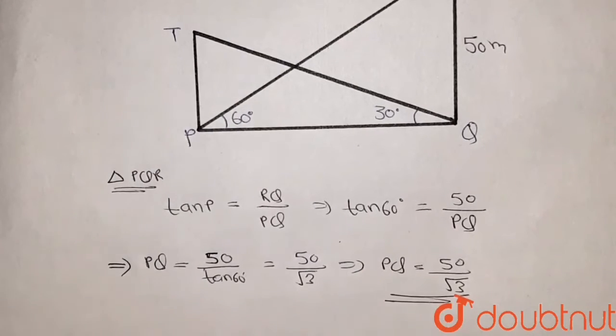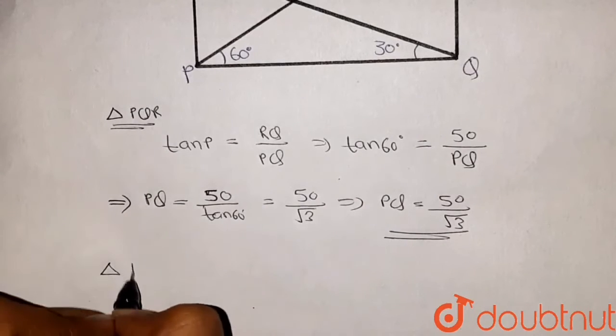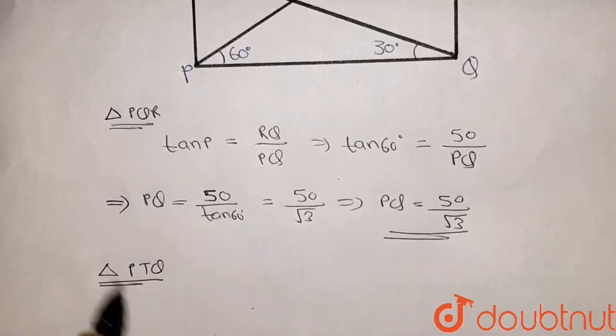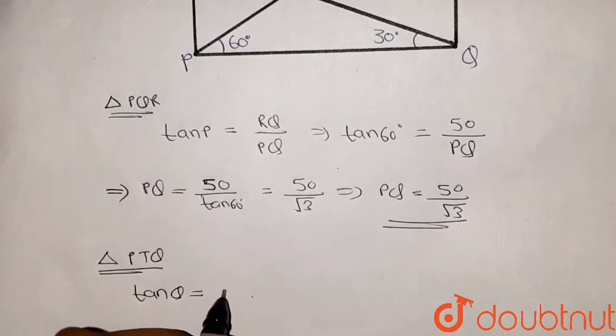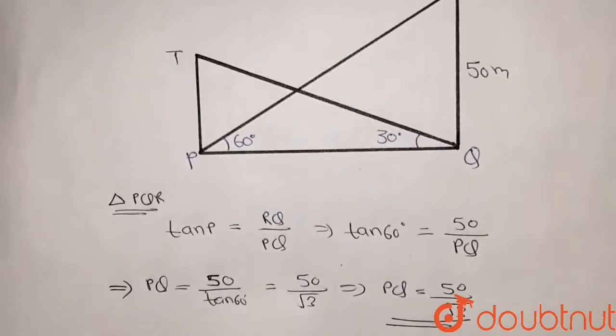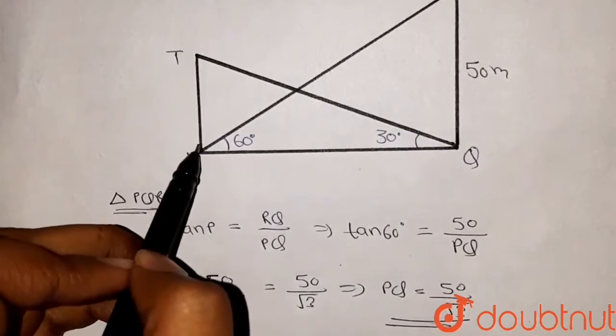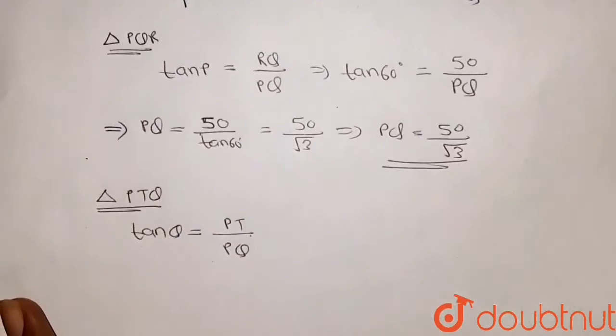Now again in triangle PTQ, I can write that tan of angle Q should be equal to PT divided by PQ. For angle Q, PT will become perpendicular and PQ will act as base. So tan of Q, which is given as 30 degrees, should be equal to PT divided by PQ.